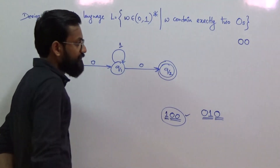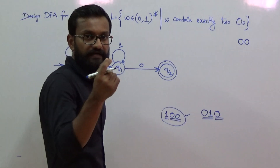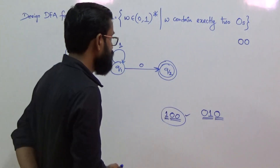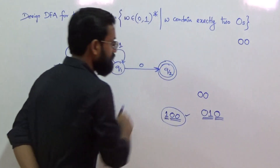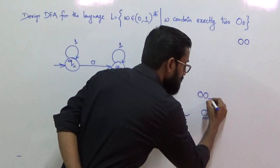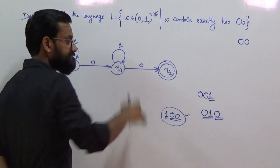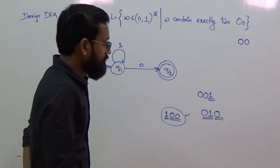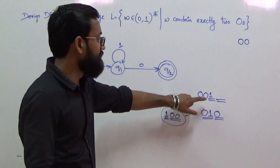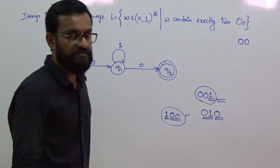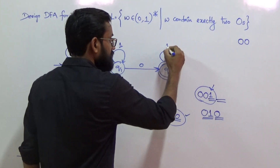Now for state q2, we apply input 1. The minimal string consumed from q0 to reach q2 is '00'. The string is already valid because it contains exactly two 0s. So the remaining minimal string needed is empty, meaning this transition must remain in the same state — q2 self-loops on input 1.